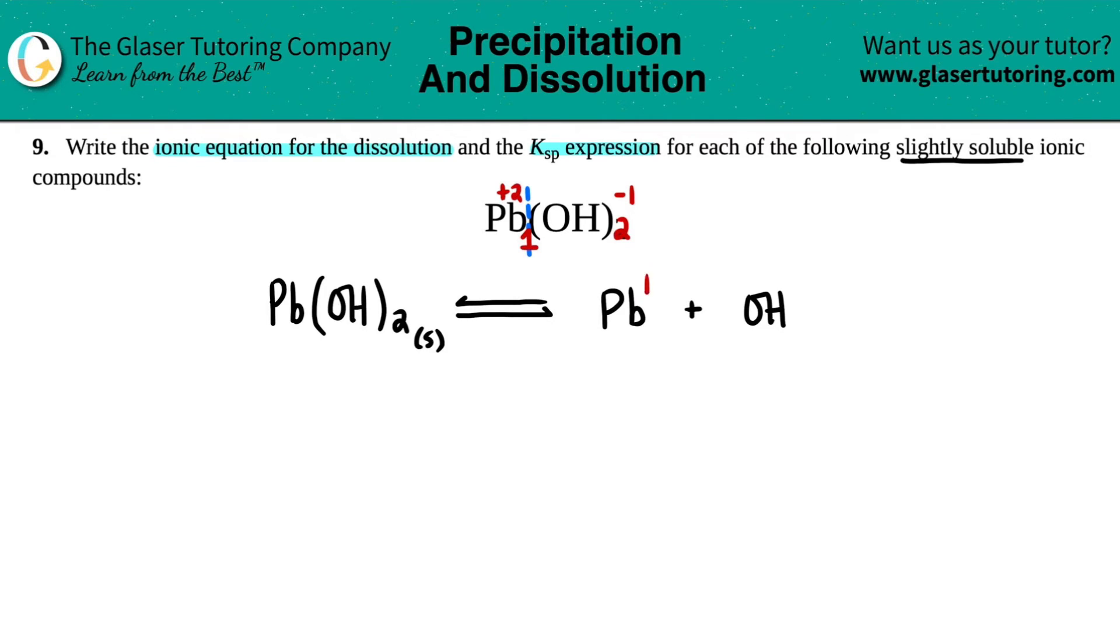So Pb, you could say plus two, two plus, it doesn't really matter. And then the hydroxide, the OH⁻, minus one, doesn't matter. We have charges. So I know that these are going to be aqueous. All charges are going to be aqueous. And now I just need to make sure, is this equation balanced?